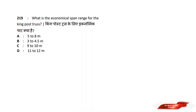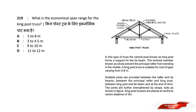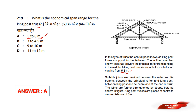What is the economical span range for the King Post Truss? Options are: A) 5–8 m, B) 3–4.5 m, C) 9–10 m, D) 11–12 m. Answer option A is 5–8 m. The economical span suitable for King Post Truss is 5–8 m.